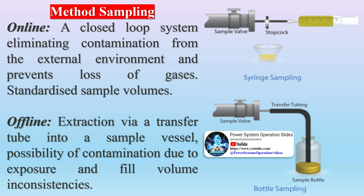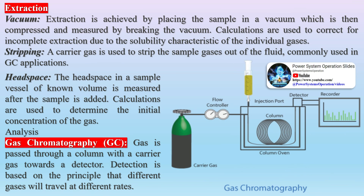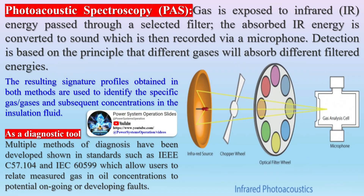Extraction methods include vacuum extraction, achieved by placing the sample in a vacuum which is then compressed and measured by breaking the vacuum; calculations are used to correct for incomplete extraction due to the solubility characteristics of the individual gases. Stripping: a carrier gas is used to strip the sample gases out of the fluid, commonly used in GC applications. Headspace: the headspace in a sample vessel of known volume is measured after the sample is added, and calculations are used to determine the initial concentration of the gas.